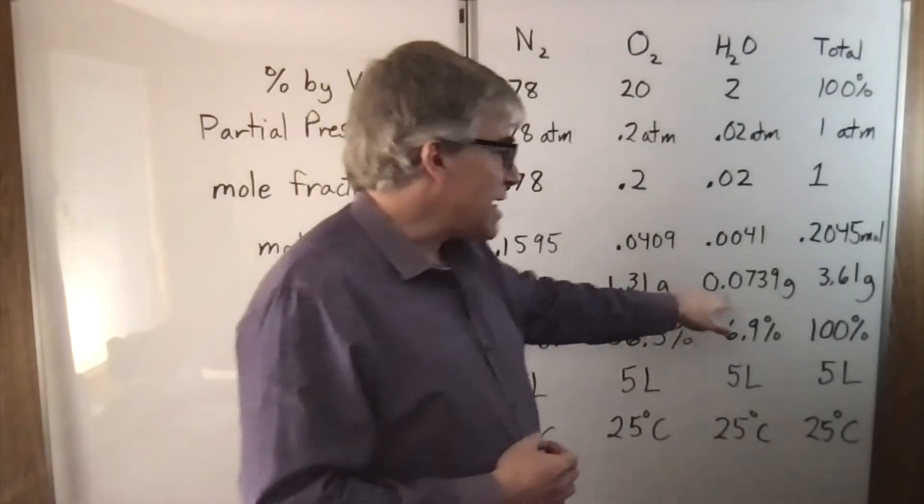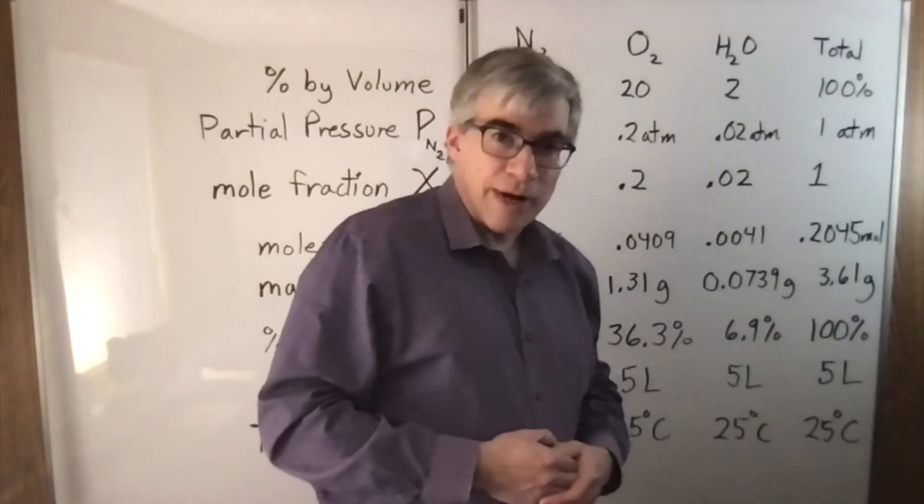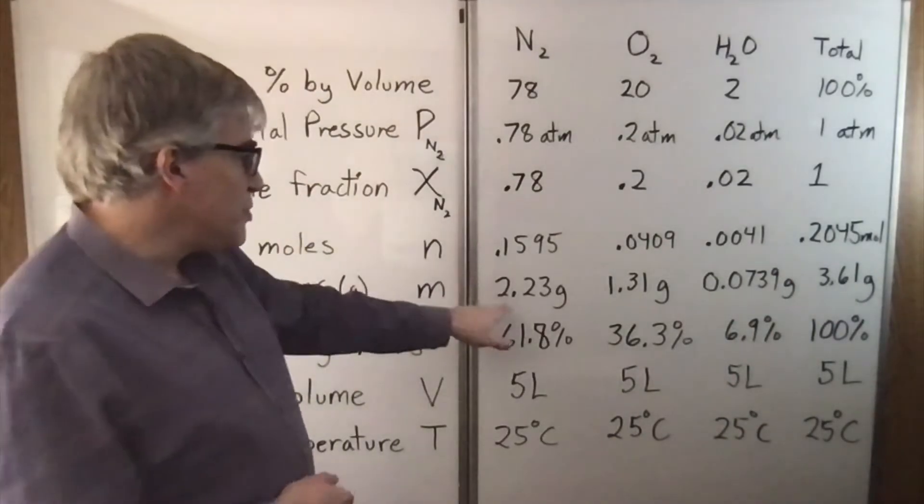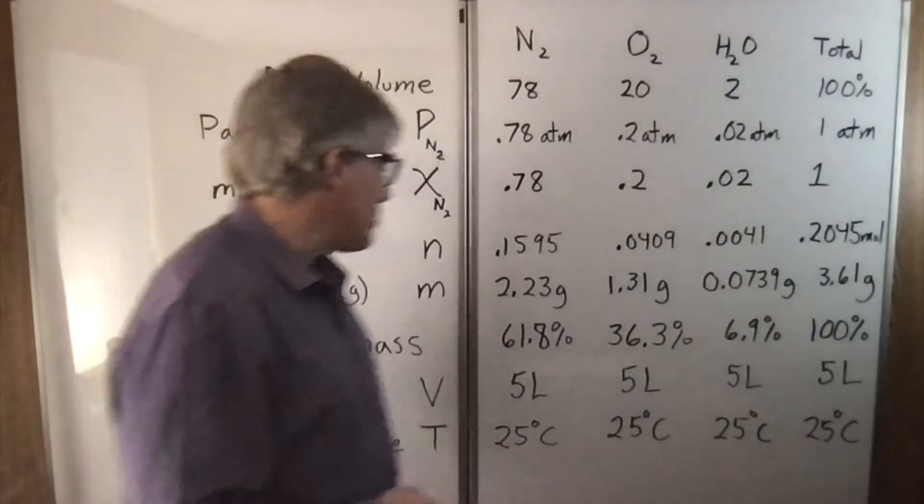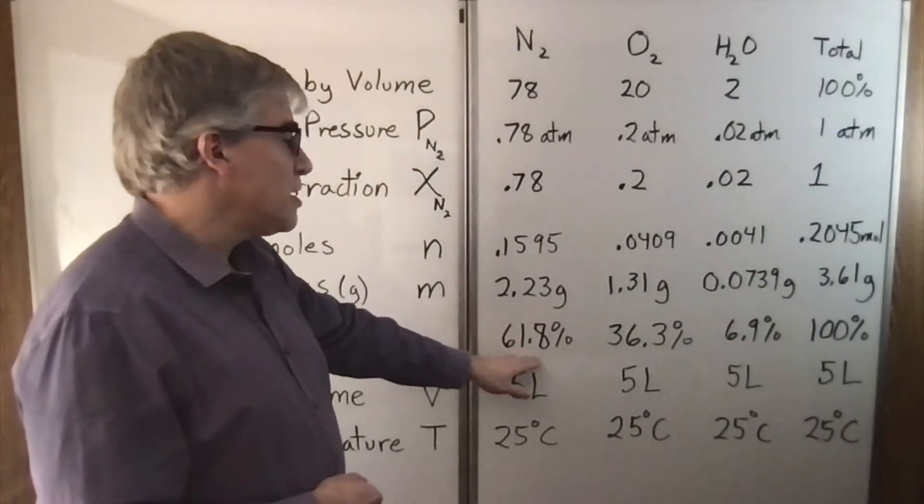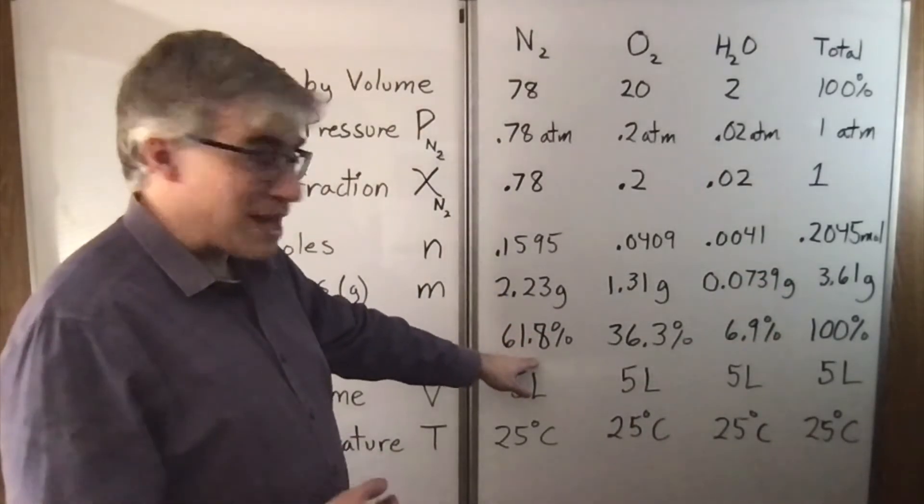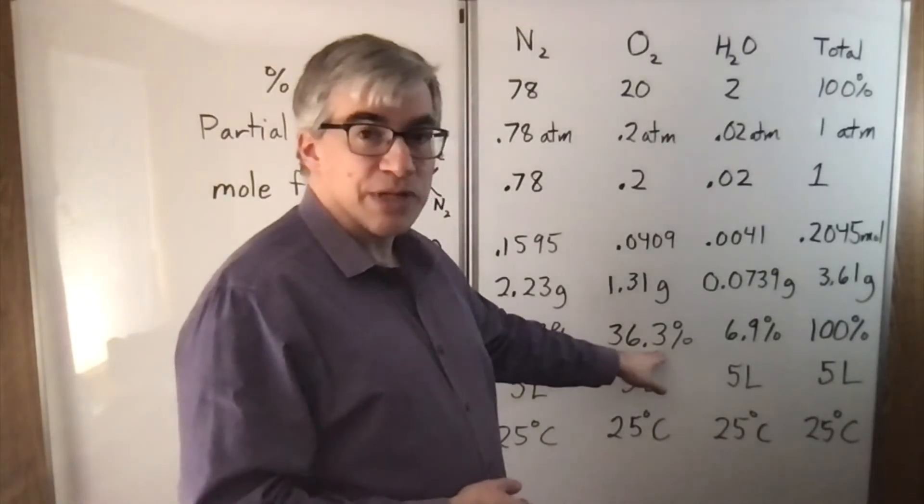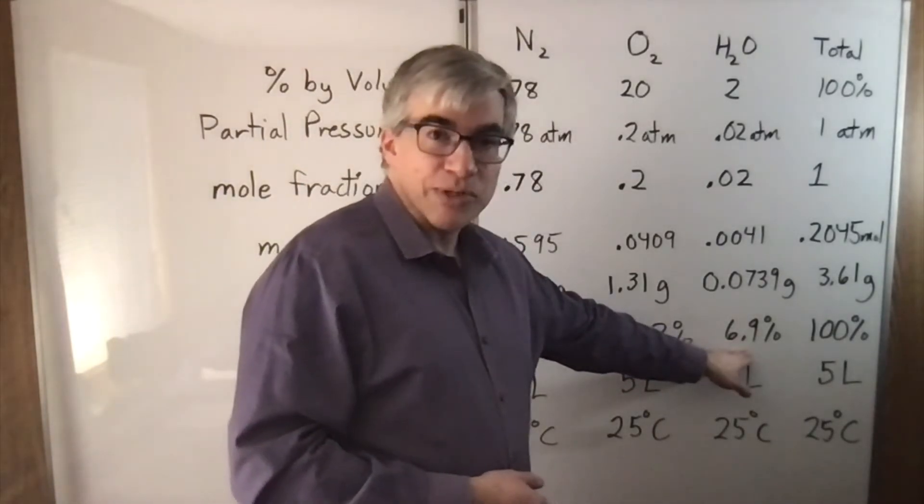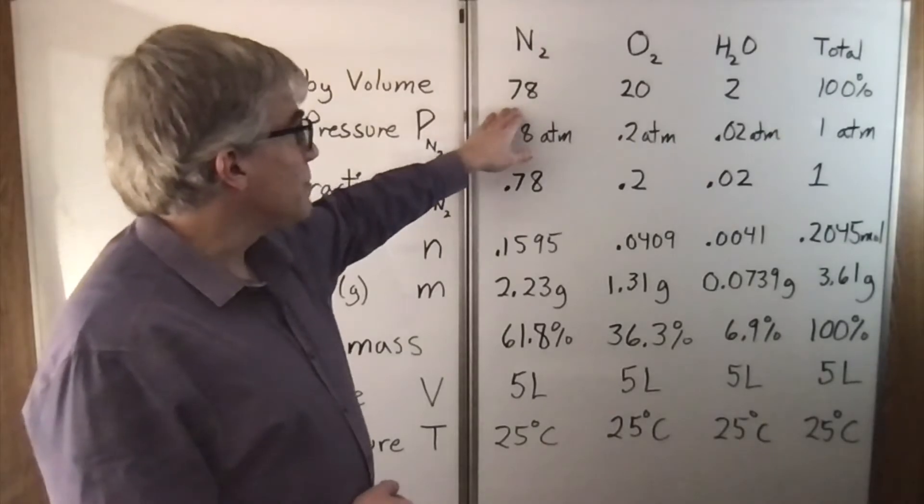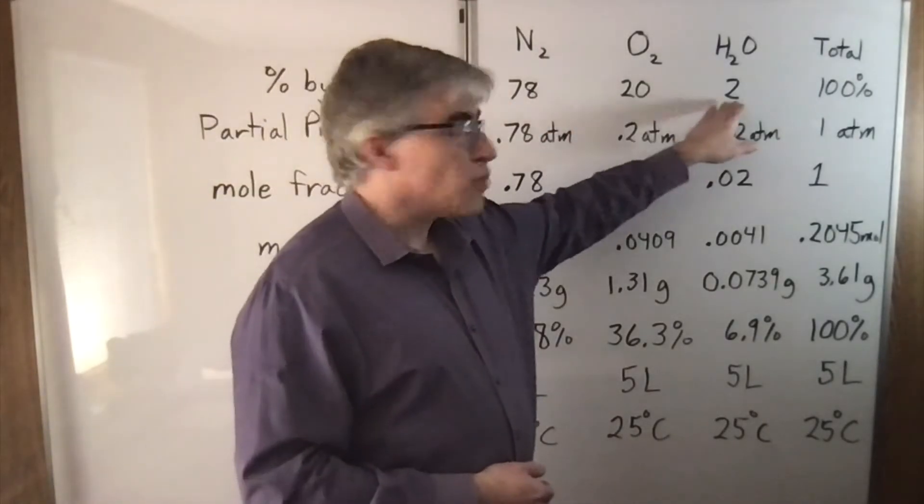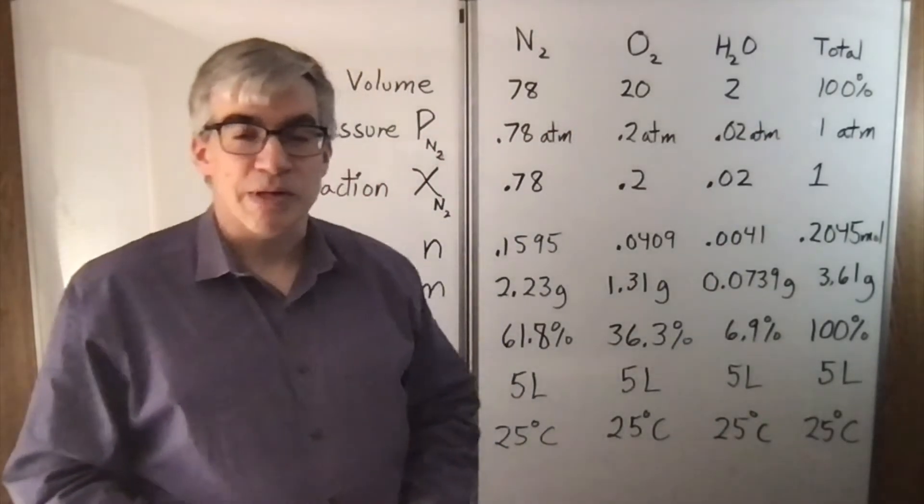If you add up those masses, we get 3.61 grams. Finally, if you divide each of these masses by the total mass, you get 61.8% nitrogen by mass, 36.3% oxygen, and 6.9%, which is very different from the 78%, 20%, 2% percent by volume.